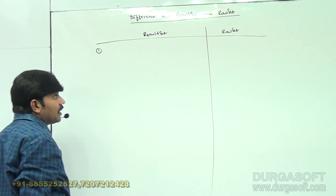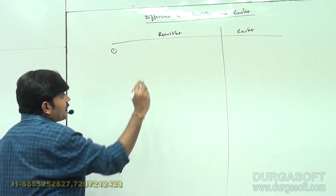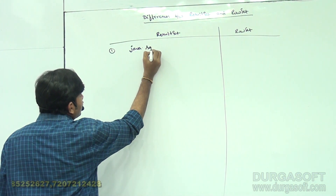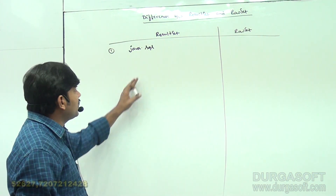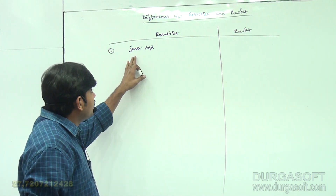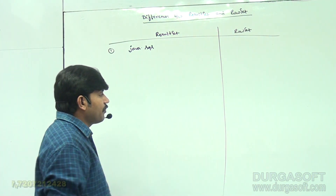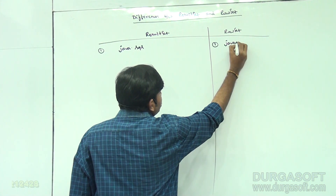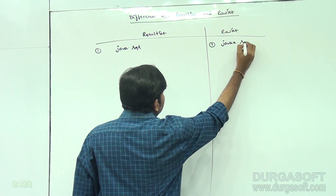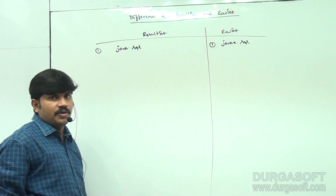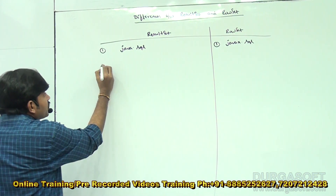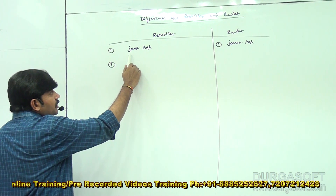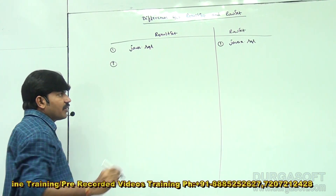First point: ResultSet is an interface present inside the java.sql package. RowSet is present inside the javax.sql package — that is the advanced package. ResultSet is in the older java.sql package.